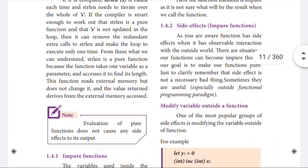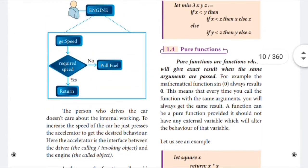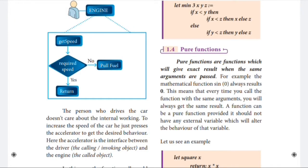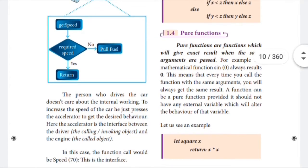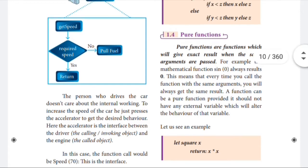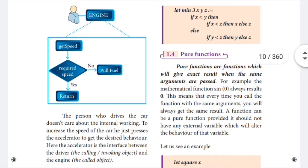What is meant by pure function and what is meant by impure function? Pure functions are functions which will give the exact result when the same arguments are passed. So when the same arguments are passed, pure functions will give the correct output result.